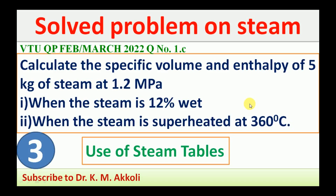Hello, I am going to solve a numerical on steam from the question paper February/March 2022, question number 1C. The problem is to calculate the specific volume and enthalpy of 5 kg of steam at 1.2 MPa — first when the steam is 12% wet, and second when the steam is superheated at 360°C.